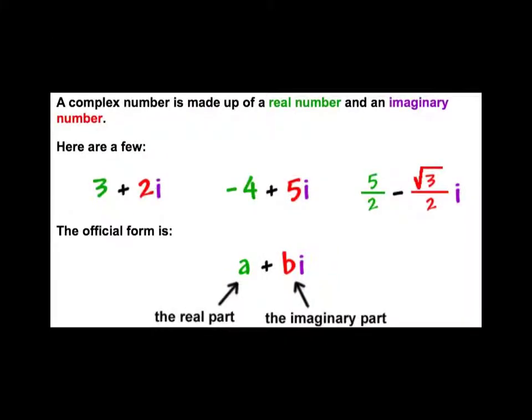A complex number is made up of a real number and an imaginary number. So here's a few. 3 plus 2i. And it's supposed to be in this format, a plus b times i, where a and b are both going to be real numbers of some kind. So b is a coefficient of that imaginary unit. Negative 4 plus 5i. You can have them in fractions. 5 halves minus root 3 over 2i. These are all imaginary numbers.